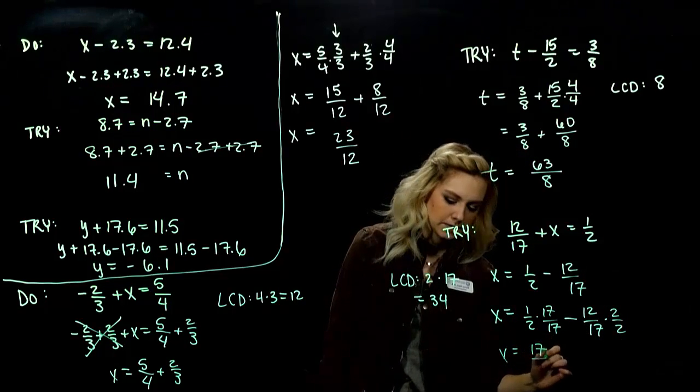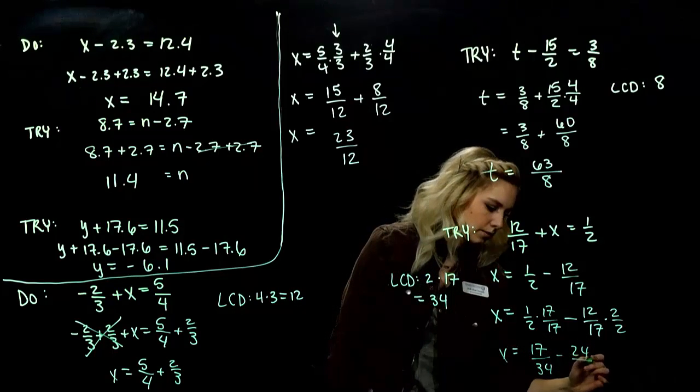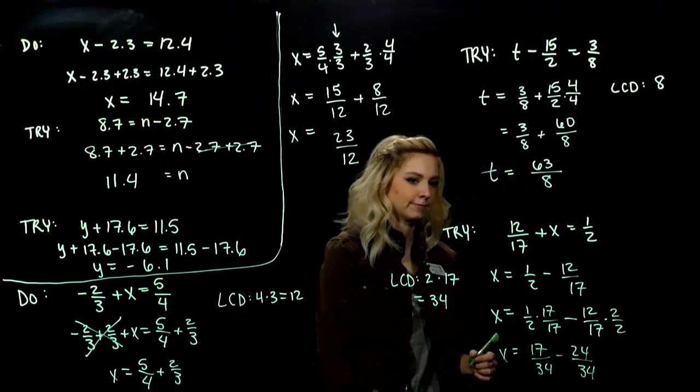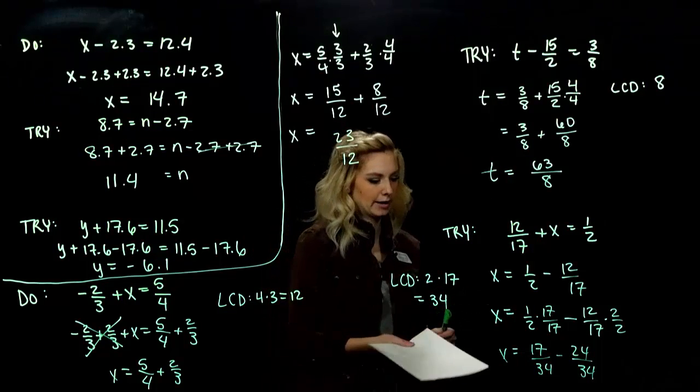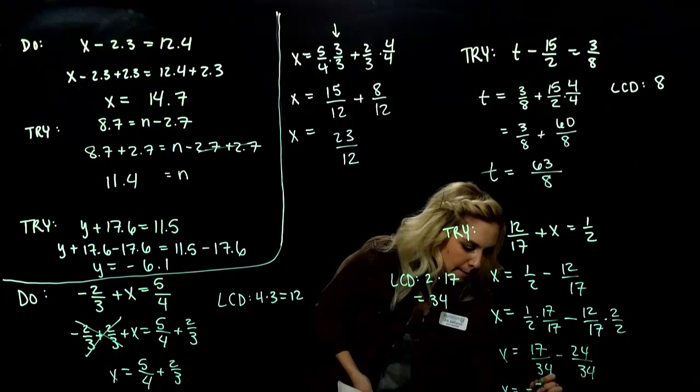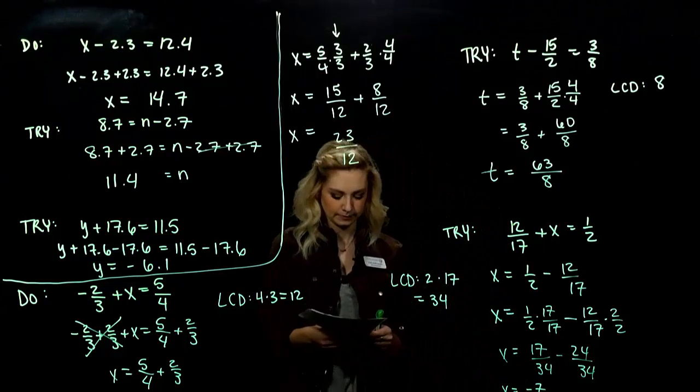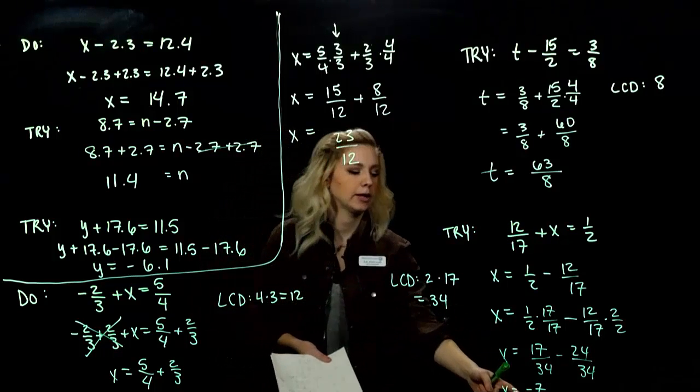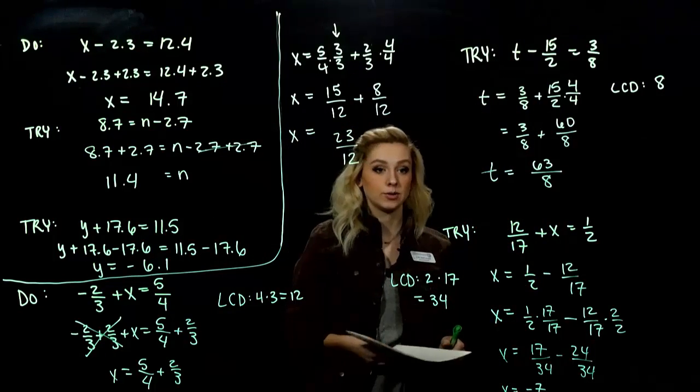So, we're looking at 17 over 34 minus 24 over 34. So, now that we have those common denominators, we actually do the subtraction. 17 minus 24, we're looking at minus 7 34ths. And we can always plug it back in and check if you aren't sure. It's a good practice to have anyway.